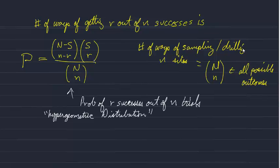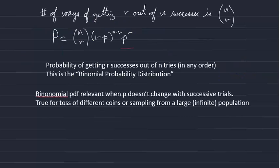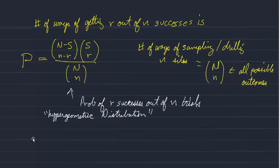In summary, we've looked at two different ways of estimating the probability of getting R successes out of N trials. The first was the binomial probability distribution, which is relevant when the probability of a single trial, little p, remains constant throughout the series of trials. This would be the case when sampling from a large population.